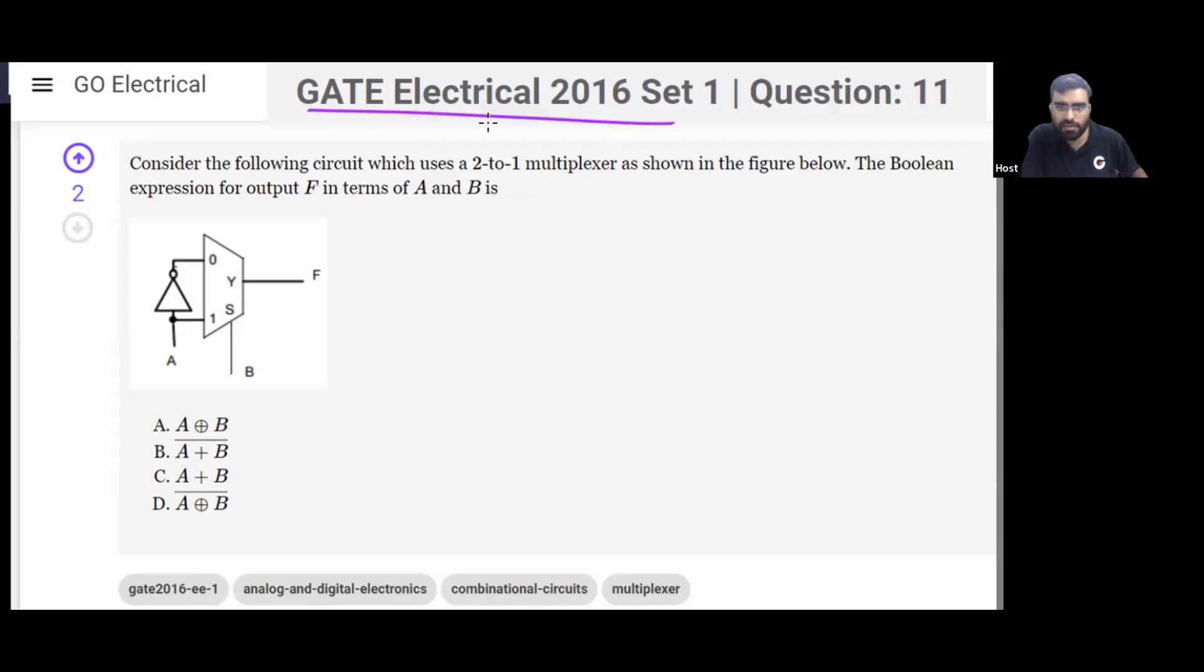This is GATE Electrical 2016 question. A multiplexer is given to you. Now let's solve it. Consider the following circuit which uses a 2-by-1 multiplexer in the circuit. This is given to you.